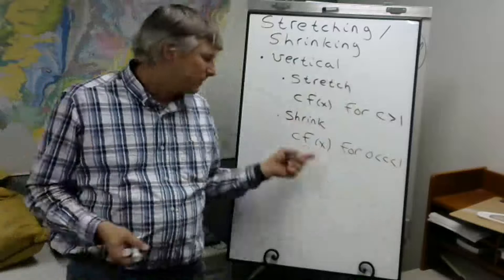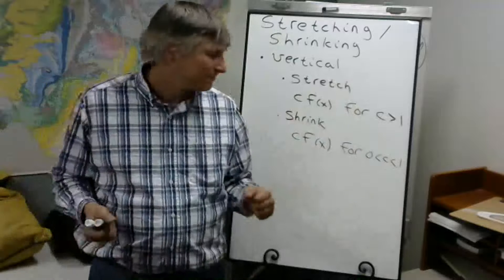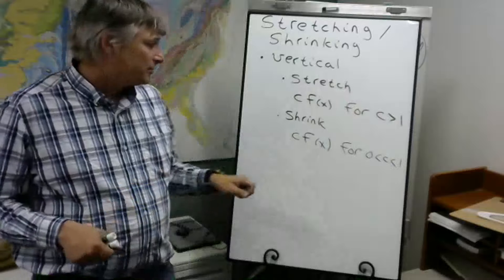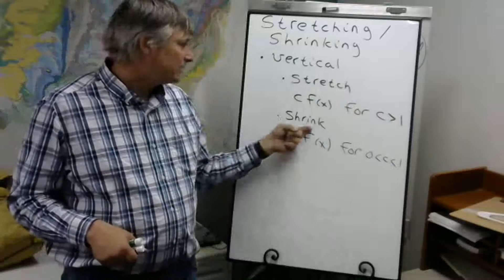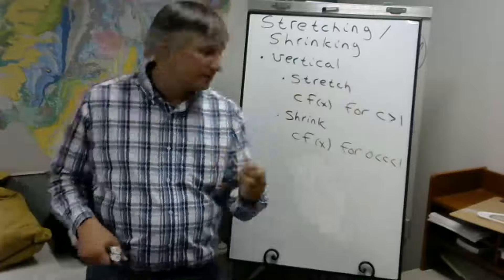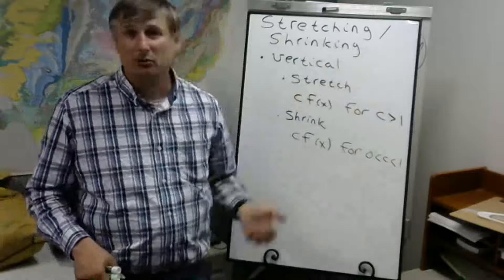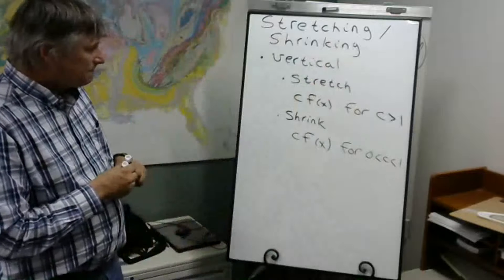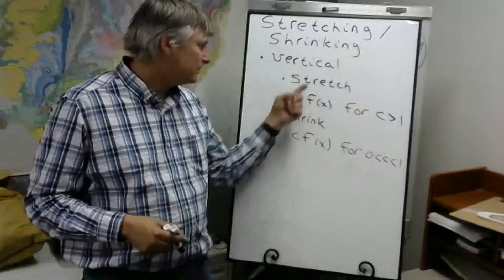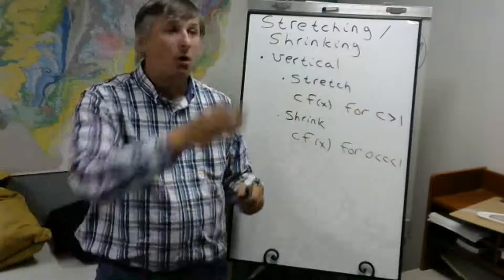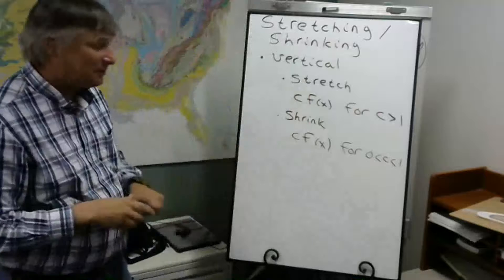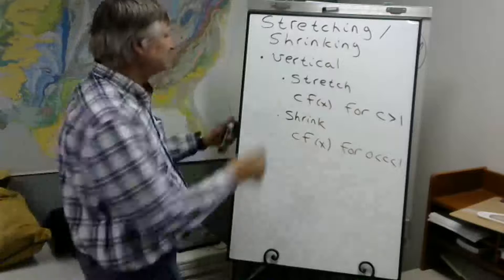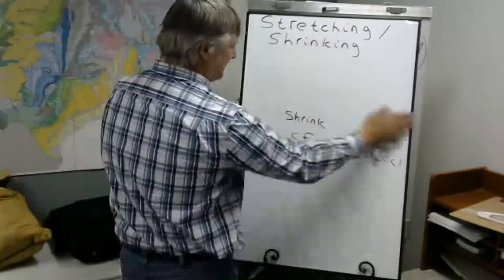If c is 1, again you're multiplying by 1, it's just the original f of x. If c is less than 0, you're actually doing two transformations: you're going to be either shrinking or stretching, and then that negative sign is going to do a reflection across the x-axis. So let's look at some examples, and again we'll go with f of x is x squared.